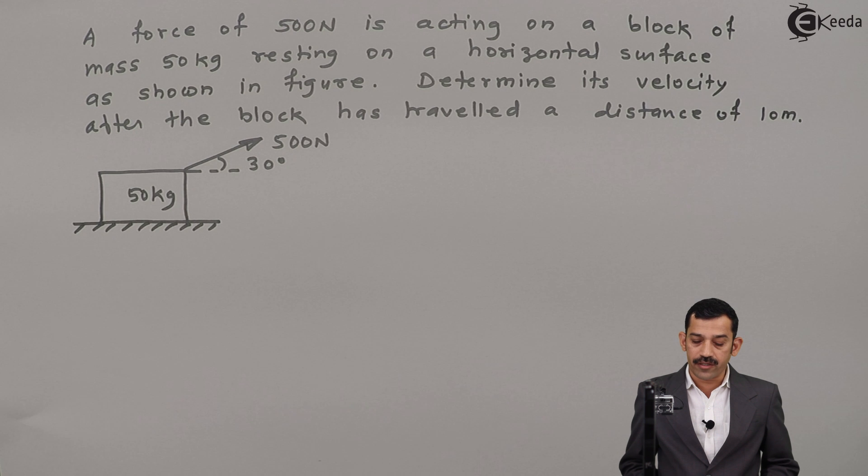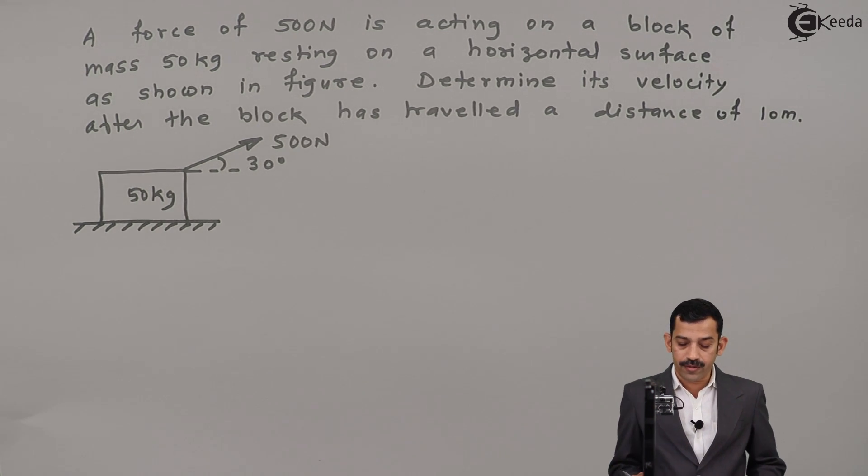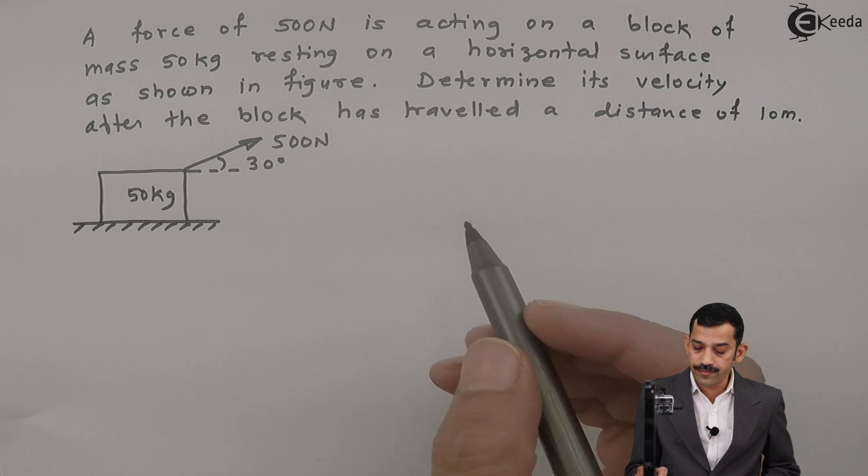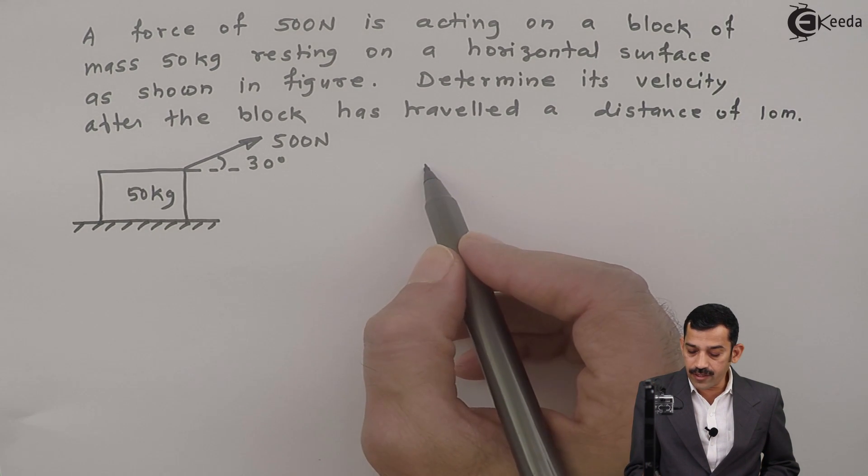Determine its velocity after the block has travelled a distance of 10 meters. Let me first draw the free body diagram of this block. If we will draw the free body diagram, what we will get here? Say this one is a block.